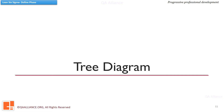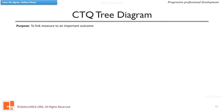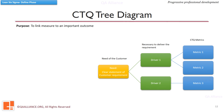Let us now understand more about a tool called the tree diagram, which is used in identifying CTQs. The purpose of this tool is to link a measure to an important outcome. After collecting the voice of customer and analyzing what the customer wants, we need to monitor the process to ensure that we deliver value to the customer. The CTQ tree diagram helps in identifying measures which could be aligned with customer needs and monitored as well.